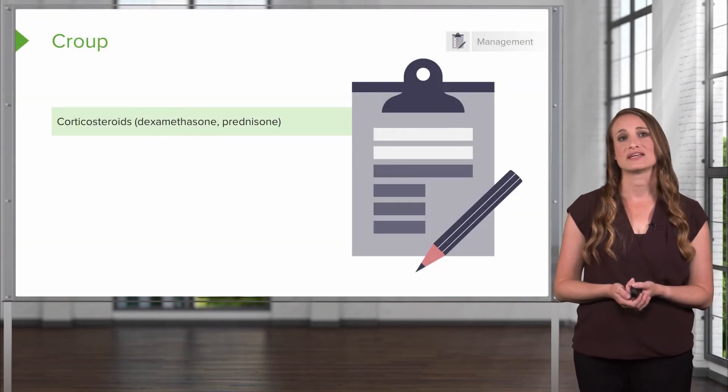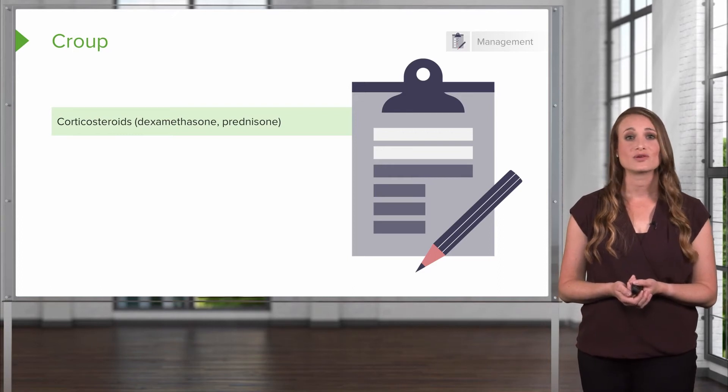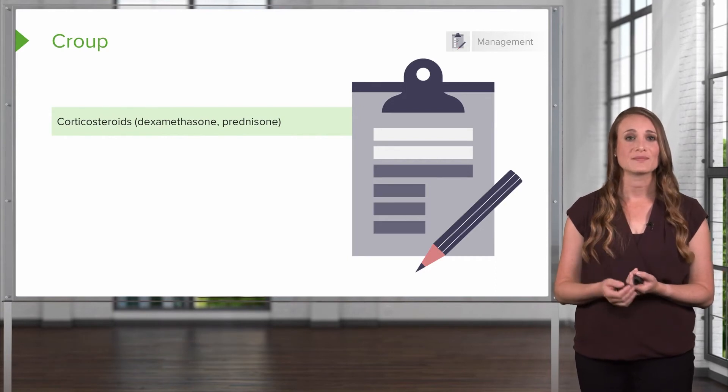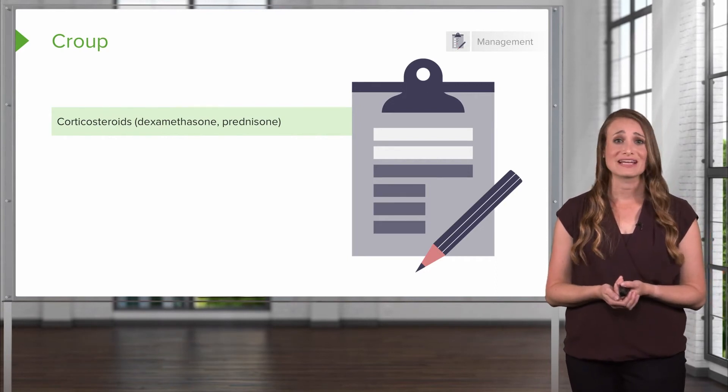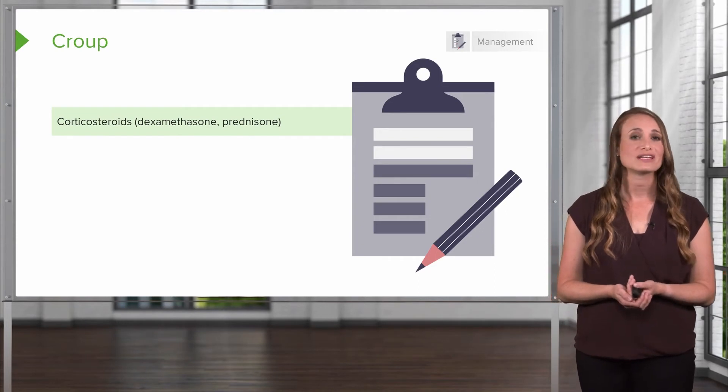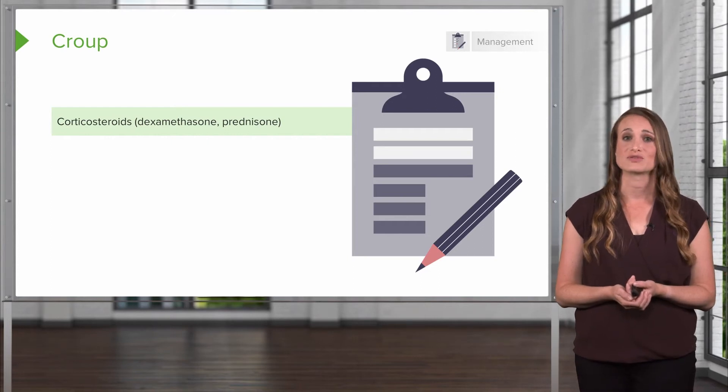The first step in managing croup is to administer corticosteroids. This could be dexamethasone or prednisone, and this is a mainstay treatment to help decrease the swelling in the upper airway. Unfortunately, these medications take a while to work. They can take four to six hours. So you want to give them early in an outpatient setting so they can get on board before the symptoms worsen that night.